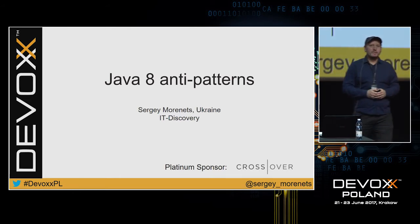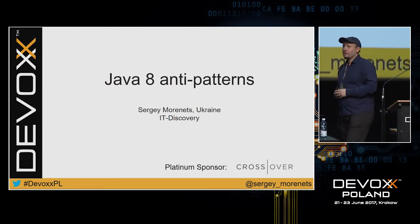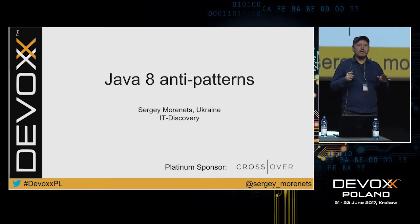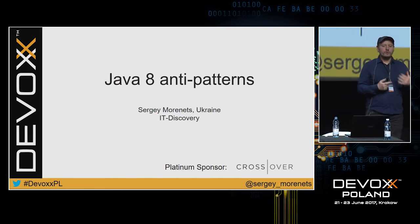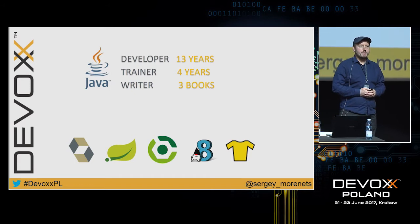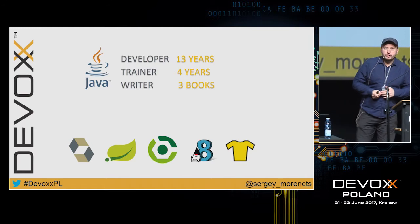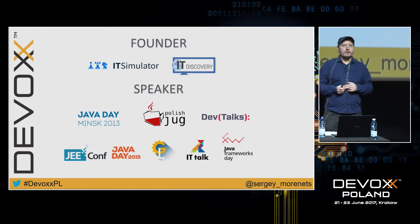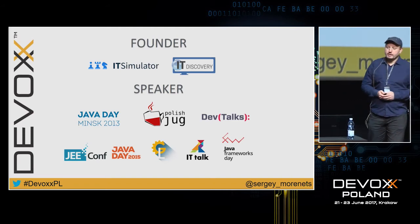Hello everyone. I'm Sergei Marinets and I came from Ukraine to speak a sad story about Java 8 migration called Java 8 anti-patterns. A few words about myself: I am mostly a Java backend developer, technical writer, I wrote three books, and I am a Java trainer and coach. I like to participate in conferences in Ukraine, in Europe, and I'm very happy to come to Krakow and present here.